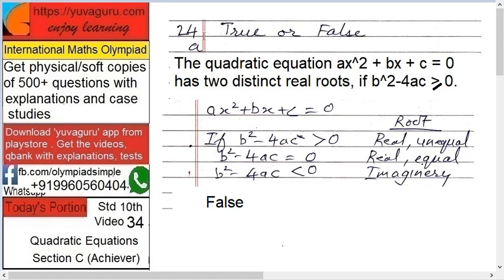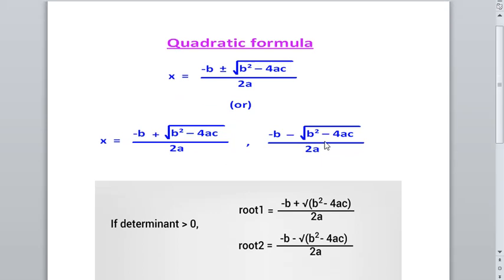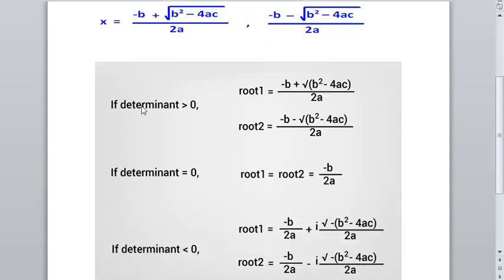There are two or three sub-questions, let's solve one by one. The quadratic equation ax² + bx + c = 0 has two distinct real roots if b² - 4ac is greater than or equal to zero. Any quadratic equation has two roots: x = (-b ± √(b² - 4ac)) / 2a. This expression b² - 4ac under the square root is known as the determinant or discriminant.